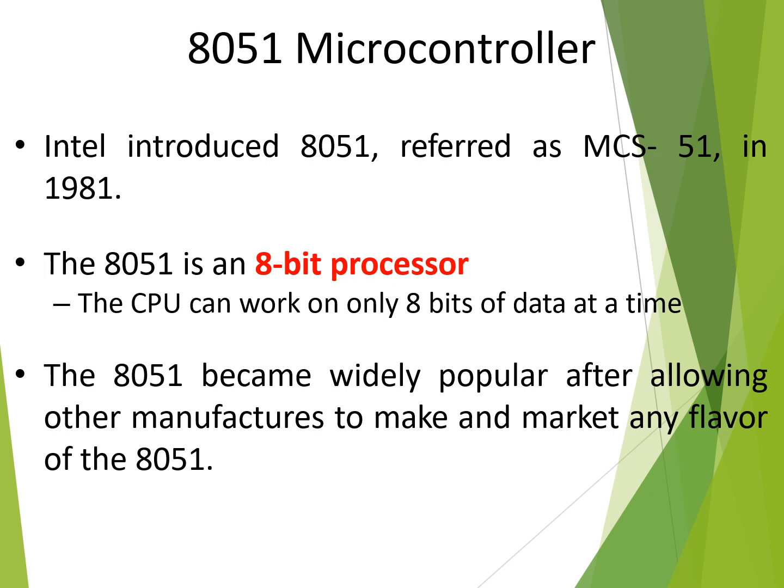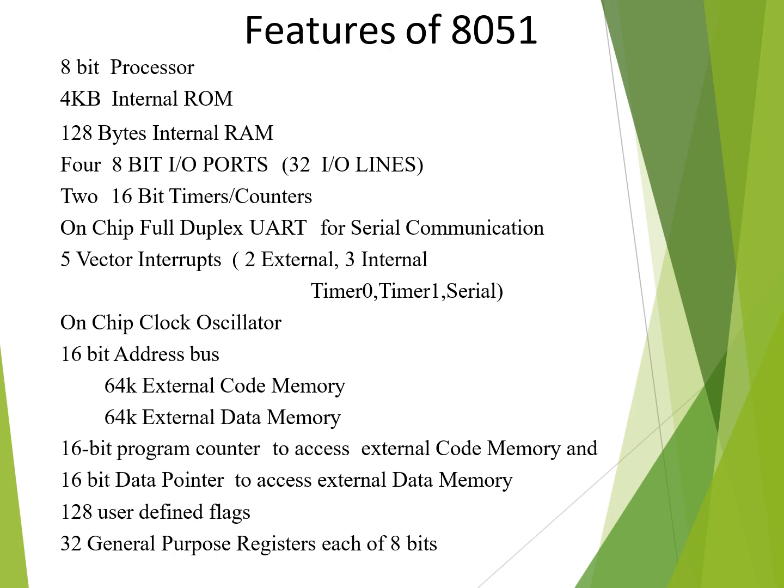Now let's see some features of the 8051 microcontroller. The 8051 microcontroller was introduced by Intel in the year 1981. It is an 8-bit processor with 4 kilobytes of internal ROM and 128 bytes of internal RAM. The RAM is used for storing data and can be called data memory, while the ROM is read-only memory used for storing programs, also called program memory or code memory. The 8051 has four 8-bit IO ports, two 16-bit timers or counters, and an on-chip UART for establishing serial communication.